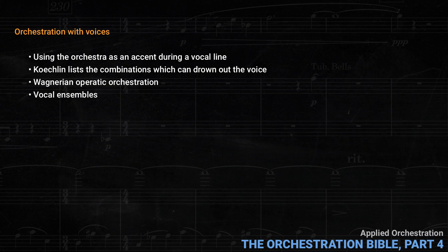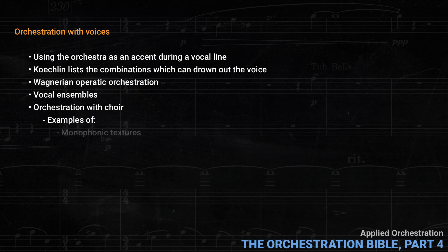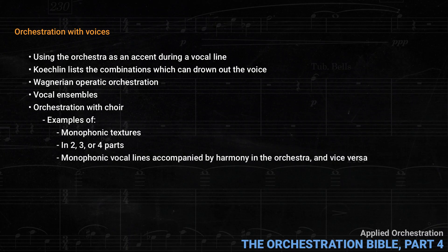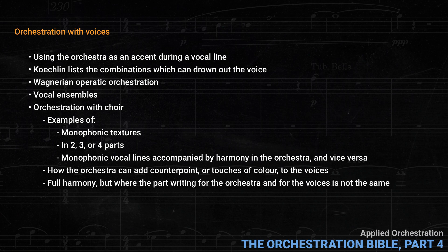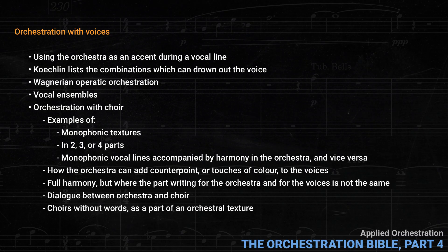After this, Koechlin goes on to look at vocal ensembles, like groups of soloists, duos, trios, quartets, and larger groups. This leads to a detailed discussion of orchestration with choir, which is different from orchestration with soloists, since choirs can be very large. Here there are examples of monophonic textures, examples in two, three, or four parts, monophonic vocal lines accompanied by harmony in the orchestra, and vice versa. Then Koechlin looks at how the orchestra can add counterpoint or touches of color to the voices, followed by full harmony where the part writing for the orchestra and voices isn't the same. There's also a section about dialogue between orchestra and choir, and even about choirs without words as part of an orchestral texture.